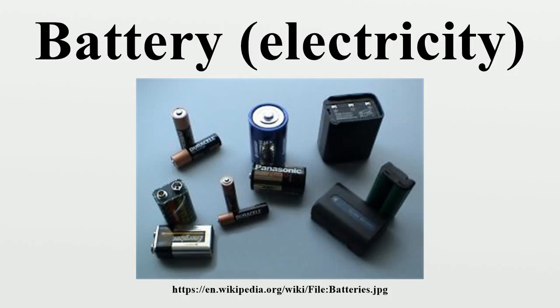A wet cell battery has a liquid electrolyte. Other names are flooded cell, since the liquid covers all internal parts, or vented cell, since gases produced during operation can escape to the air.